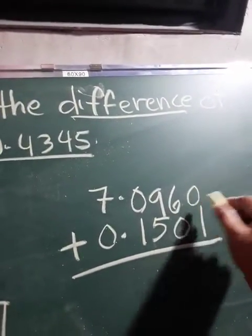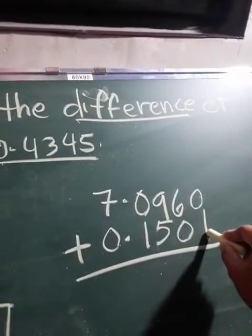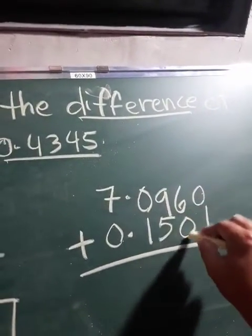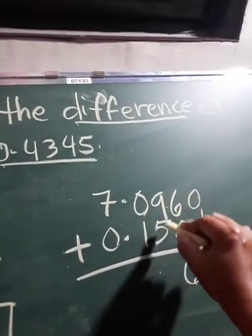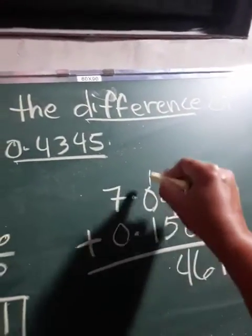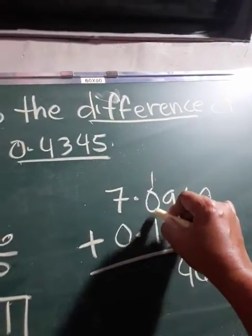So 0 plus 1 is 1. 6 plus 0 is 6, 9 plus 5 is 14. Carry 1, 1 plus 0, 1 plus 1 is 2.